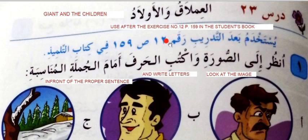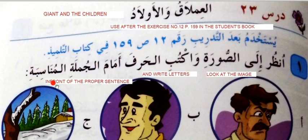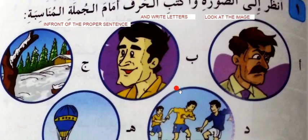Raqam ithnash, safa mia wa tisa wa khamsin — exercise number 12, page 159 in the student's book. Unzur ila al-surati — look at the image — wa iktab al-harf amam al-jumla al-munasibah — and write the letter in front of the proper sentence. So look at the image and write the letter in front of the correct sentence.